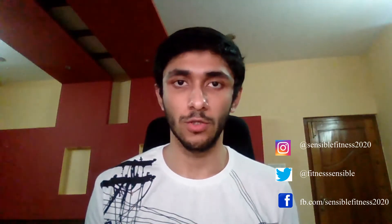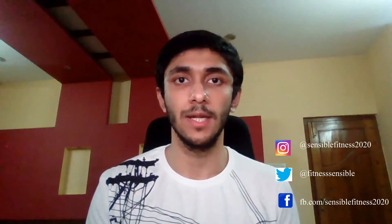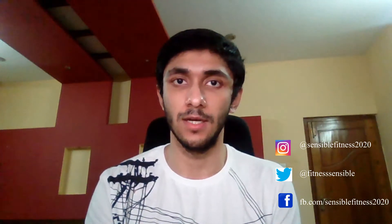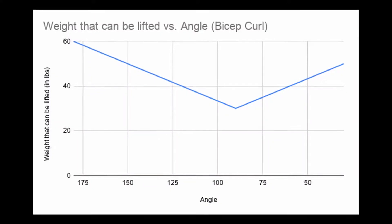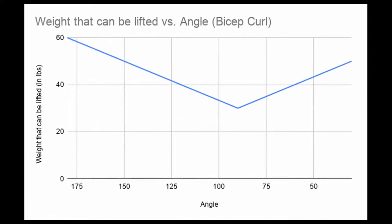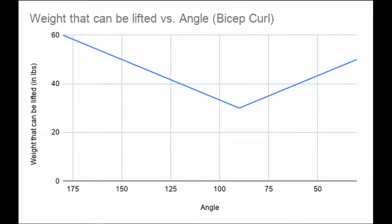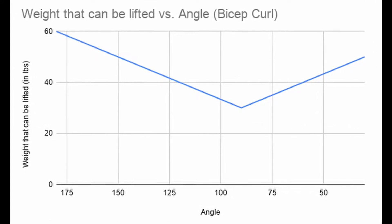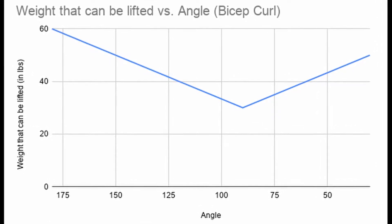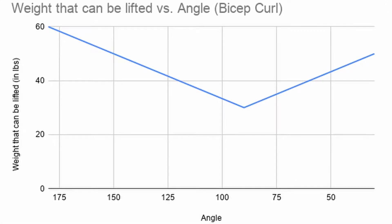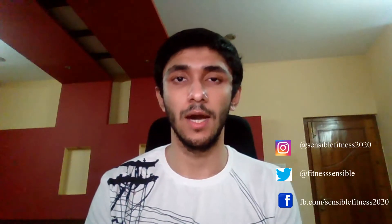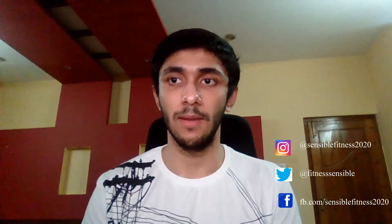For example, when your hands are by your side or indeed when your hands are up closer to your chest, you're actually able to hold a lot more weight than if your hands were at the 90 degree angle. So your strength curve in this particular movement would be highest at the beginning, would then drop when you get closer and closer to that 90 degree angle, and then would pick up again once you move away from that 90 degree angle and move the barbell or dumbbell closer to your chest. This would be a typical strength curve of a bicep curl.